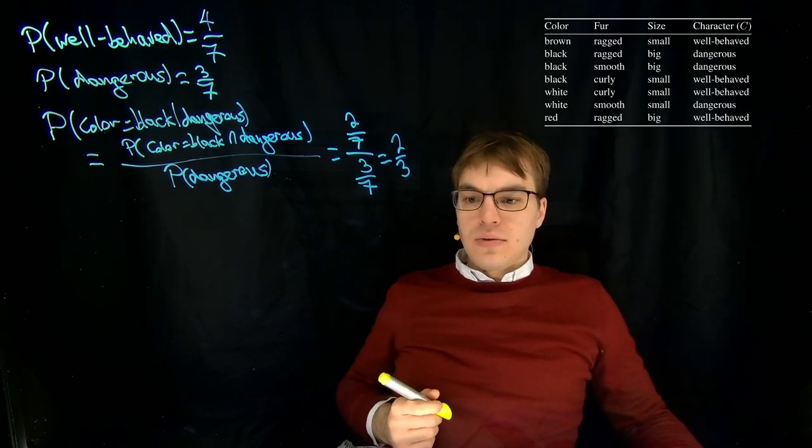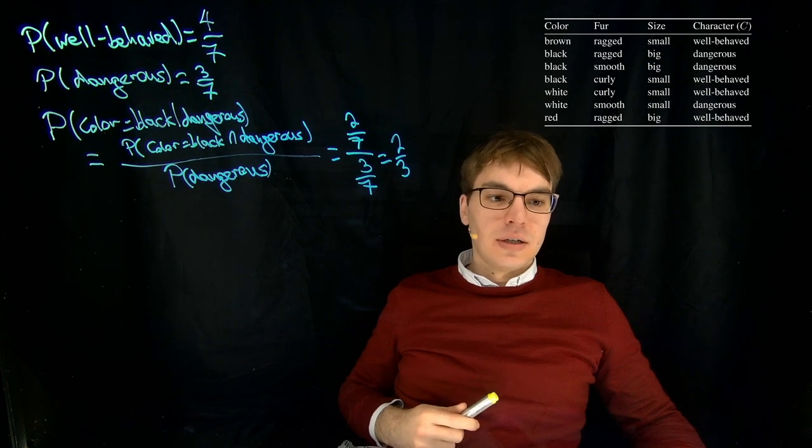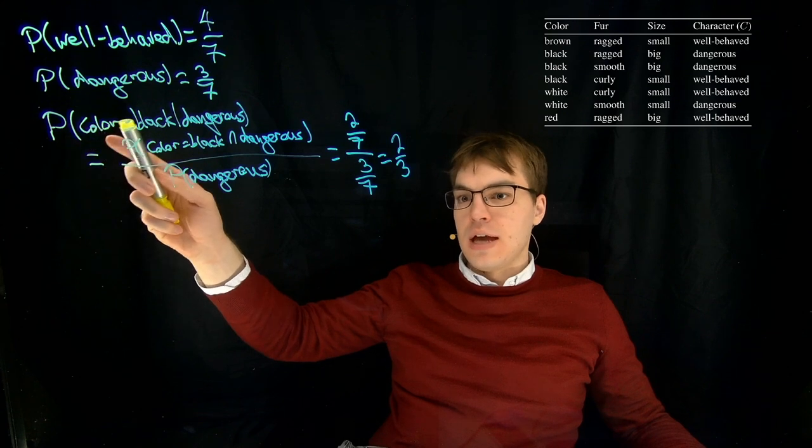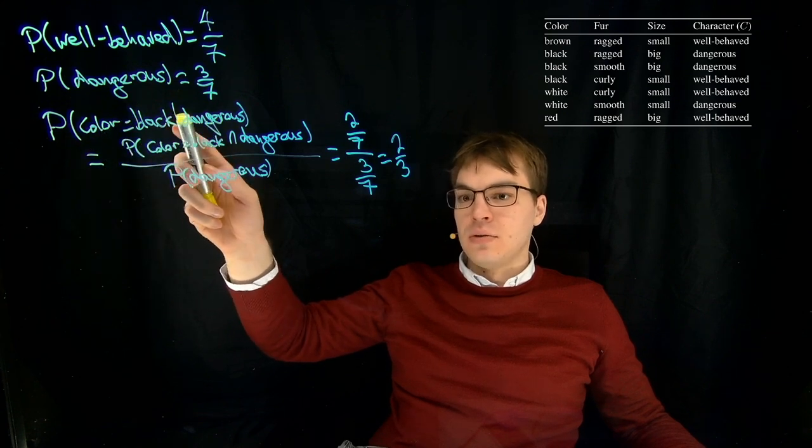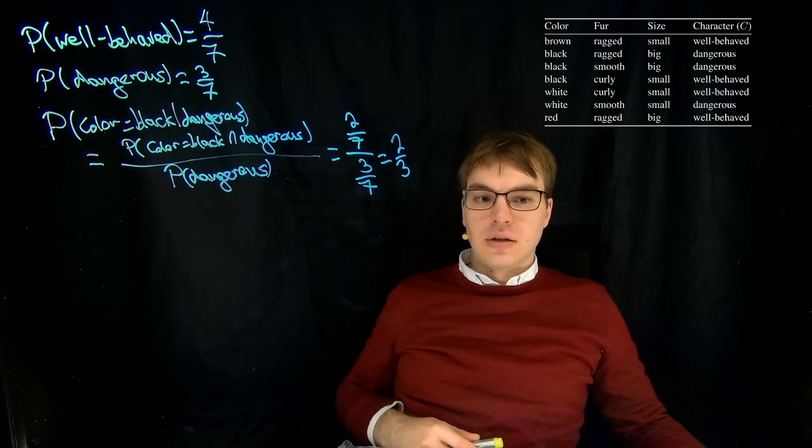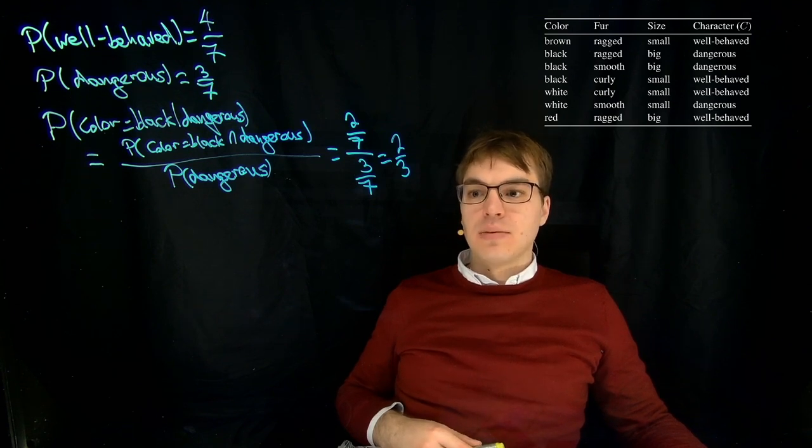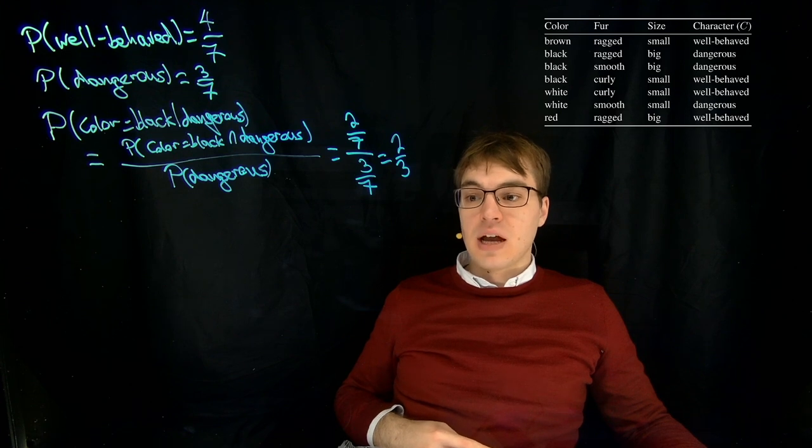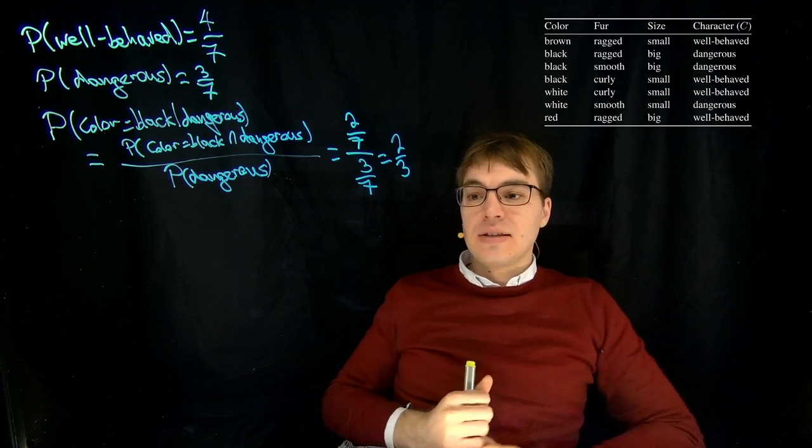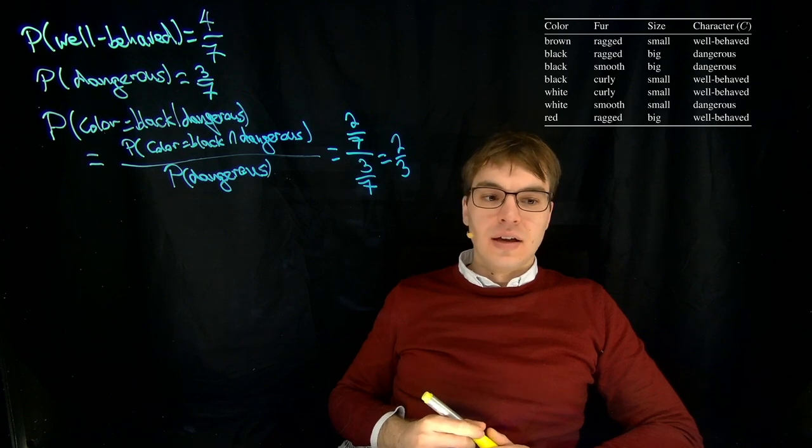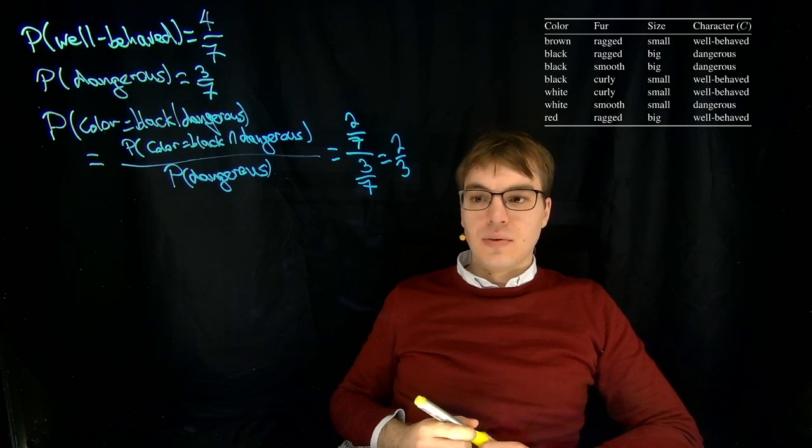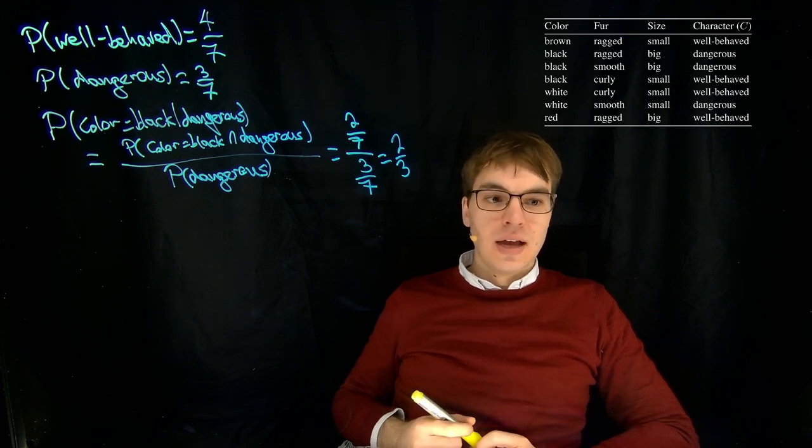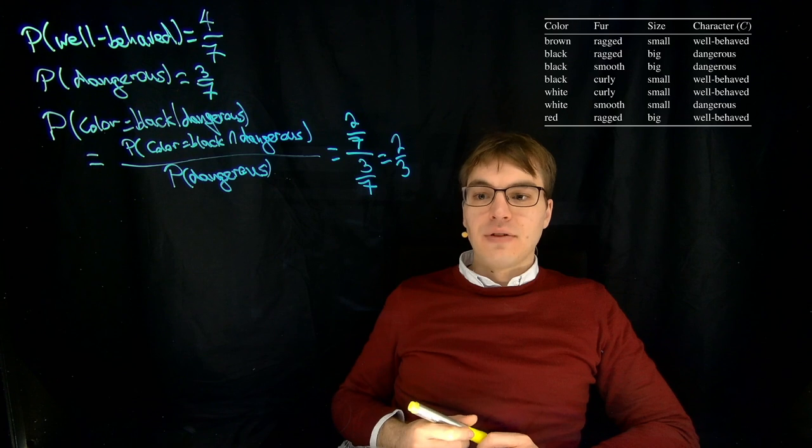Now we do that for every configuration, for every P of attribute equals value, given a certain class, and then we have our full table of attribute value probabilities given our class. Now, the task is to actually classify a new example which is not contained here, which would be the color is black, the fur is ragged, and the size is small.